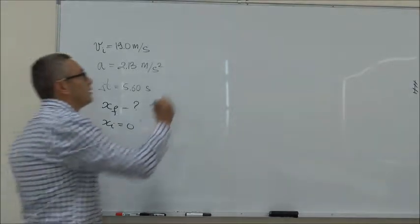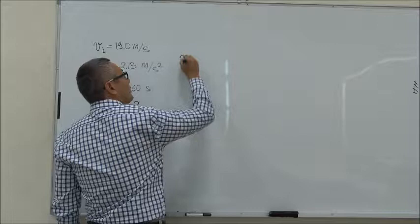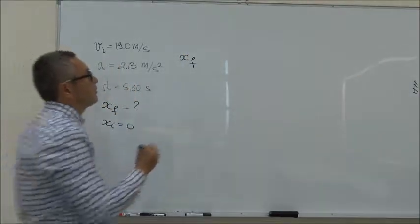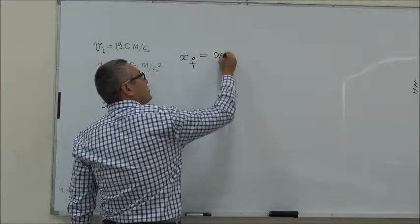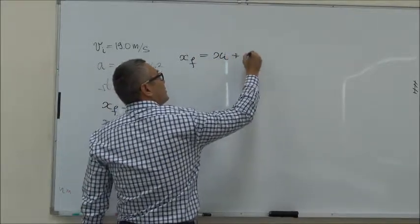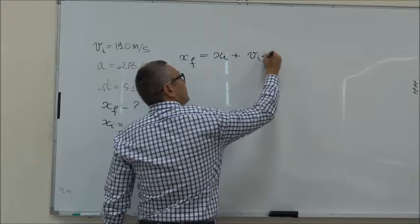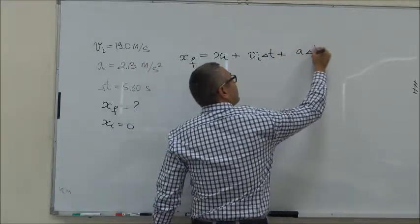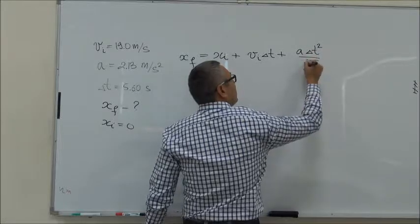Now, from the lecture we know that for a constant acceleration the position is given as x final equals x initial plus V initial delta t plus A delta t squared over 2.